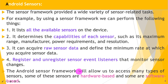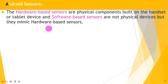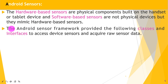The Android sensor framework allows access to many types of sensors. Some of these sensors are hardware-based and some are software-based. Hardware-based sensors are physical components built into the handset or tablet device. Software-based sensors are not physical devices but they mimic hardware-based sensors.